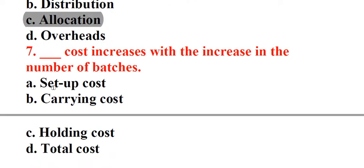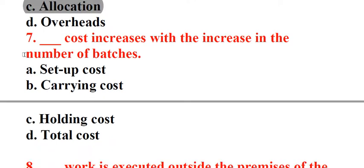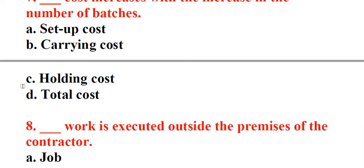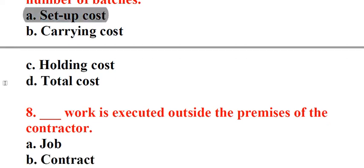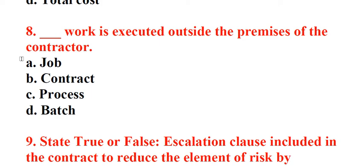Question 7: Underscore cost increases with the increase in the number of batches. A. Setup cost, B. Carrying cost, C. Holding cost, D. Total cost. Answer: A. Setup cost. Question 8: Underscore work is executed outside the premises of the contractor. A. Job, B. Contract, C. Process, D. Batch. Answer: B. Contract.